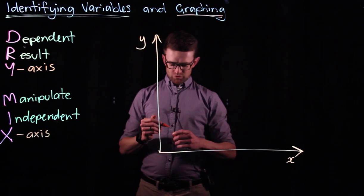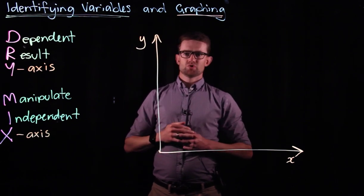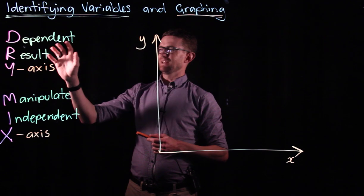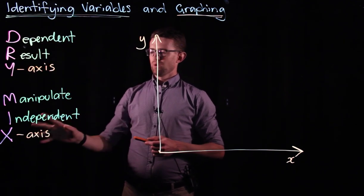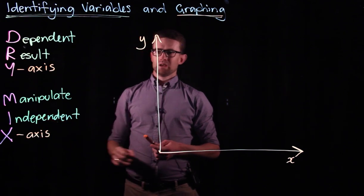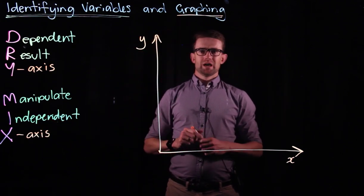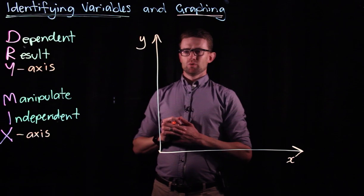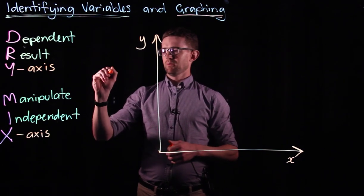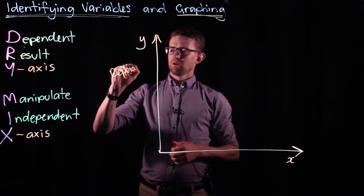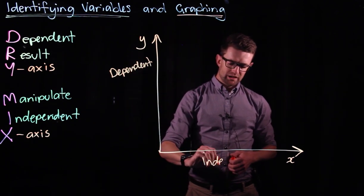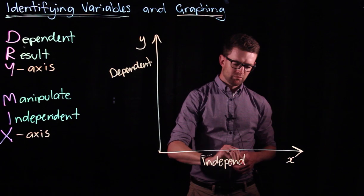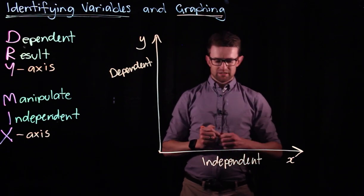And the independent variable always goes on the x-axis. So if you remember that using DRY MIX, you will make sure that you can always identify in your experiment which is the dependent variable, which is the independent variable, and then you'll be able to work out which axes to put them on when you're plotting the graph. You'll put the dependent on the y and you always put the independent on the x.